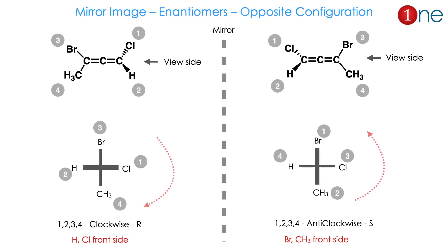Allene also has the same property as any other chiral carbon — its mirror image has the opposite configuration. Here I give an allene and its mirror image. The viewing sides are the same. In the left compound you are seeing from the chlorine-hydrogen side; in the right compound from the bromine-methyl side. Analyzing the configuration: the left side will be clockwise (R) and the right side will be anti-clockwise (S). Mirror images always give opposite configurations and cancel each other out.